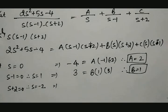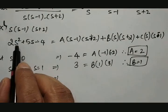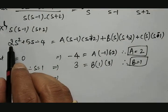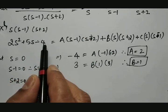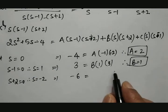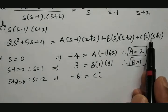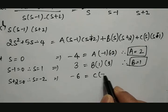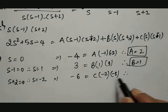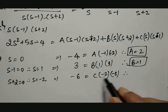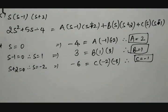Next, putting s = -2: (-2)² = 4, so 2(4) + 5(-2) - 4 = 8 - 10 - 4 = -6, which equals C(-2)(-2 - 1) = C(-2)(-3) = 6C. Therefore, C = -1.